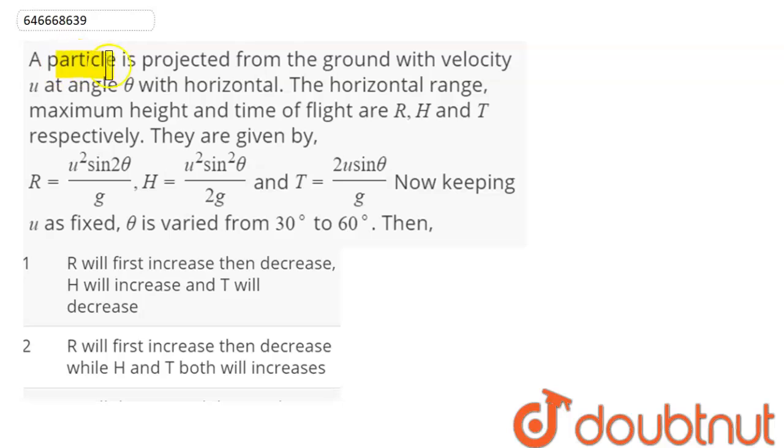Question is, a particle is projected from the ground with velocity u at angle theta with horizontal. The horizontal range, maximum height and time of flight are R, H and T respectively. They are given by R = u² sin2θ/g, H = u² sin²θ/2g and T = 2u sinθ/g.